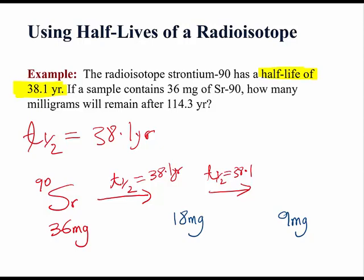And after another half-life, we should have 4.5 mg of strontium-90 remaining. That is another half-life of 38.1 years. If you add the three half-lives together, you should get 114.3 years.